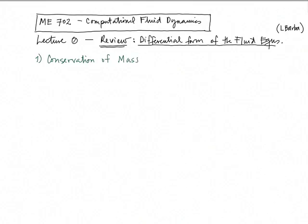Of course you know that mass is a quantity that is conserved. Mass is not lost or destroyed, and therefore for a system — a system being an identifiable group of matter in the fluid — we can agree that the change with respect to time of the mass of the system has to be equal to zero. Mass does not change.